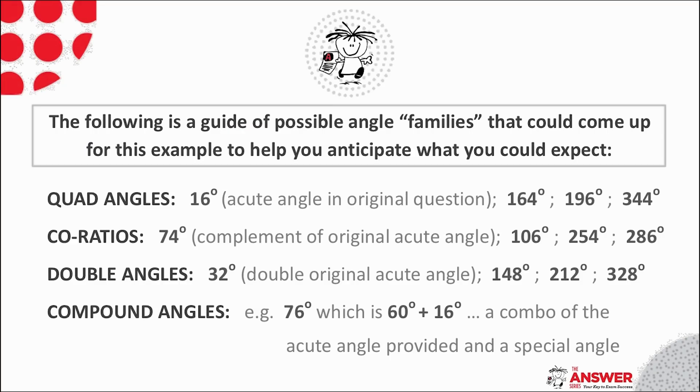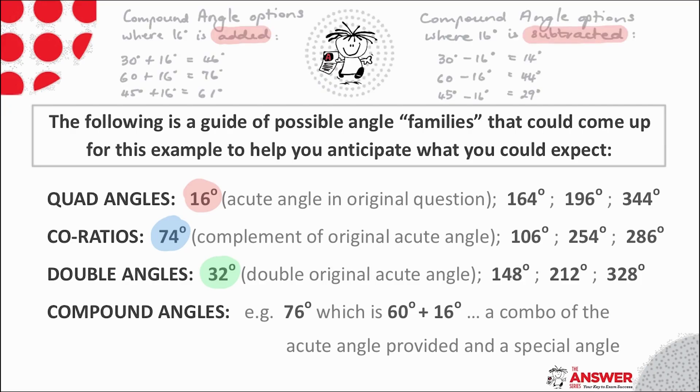Let's start with considering the given acute angle of 16 degrees or any of its family across all four quads. Then what about its complement 74 degrees or any of its family? The next option to consider is 16's double angle 32 degrees and all of its family and lastly possible compound angle options connected to 16 degrees. There are several options here, 16 could be combined with 30, 60 or 45 degrees and could be added to or subtracted from this special angle.